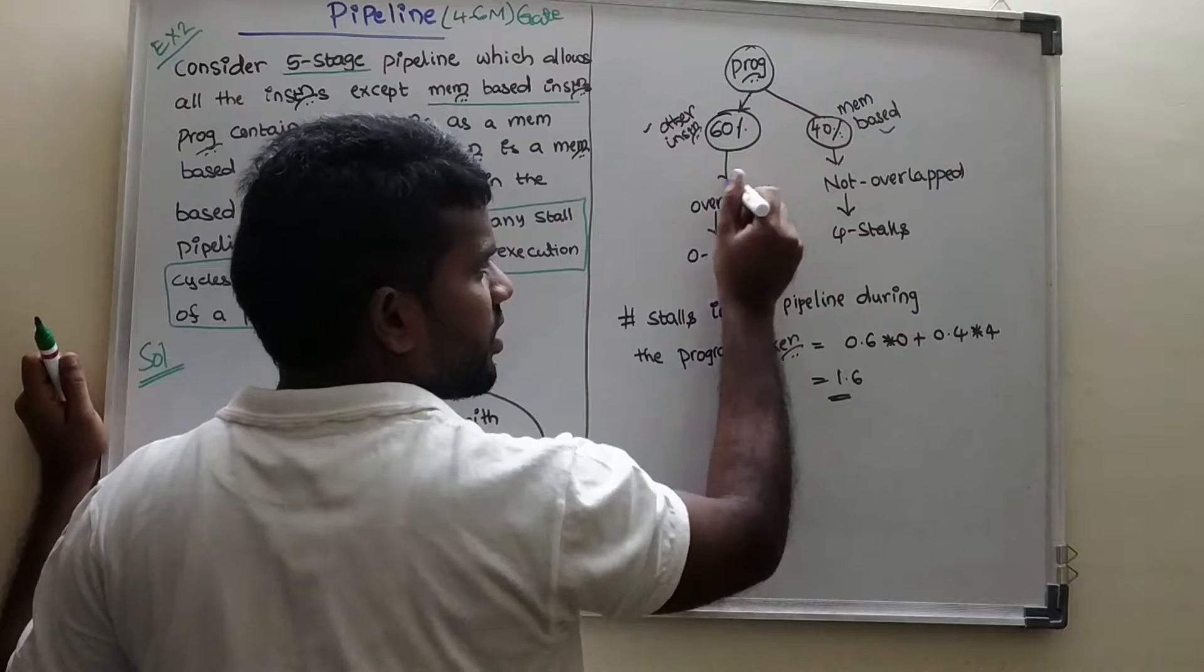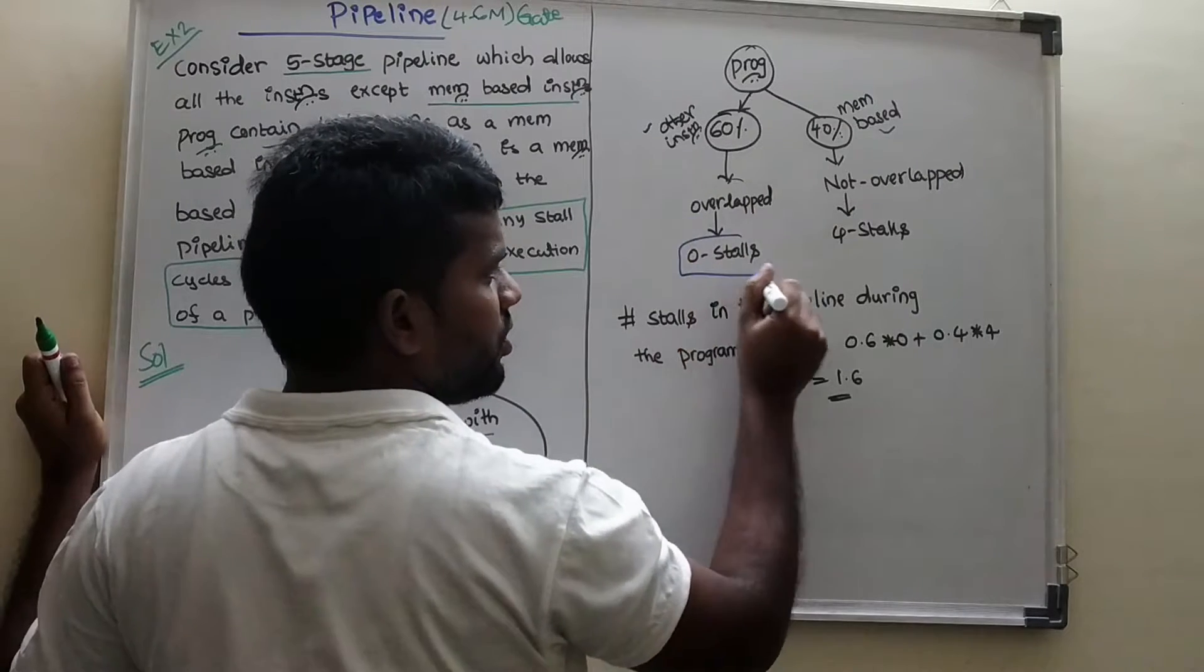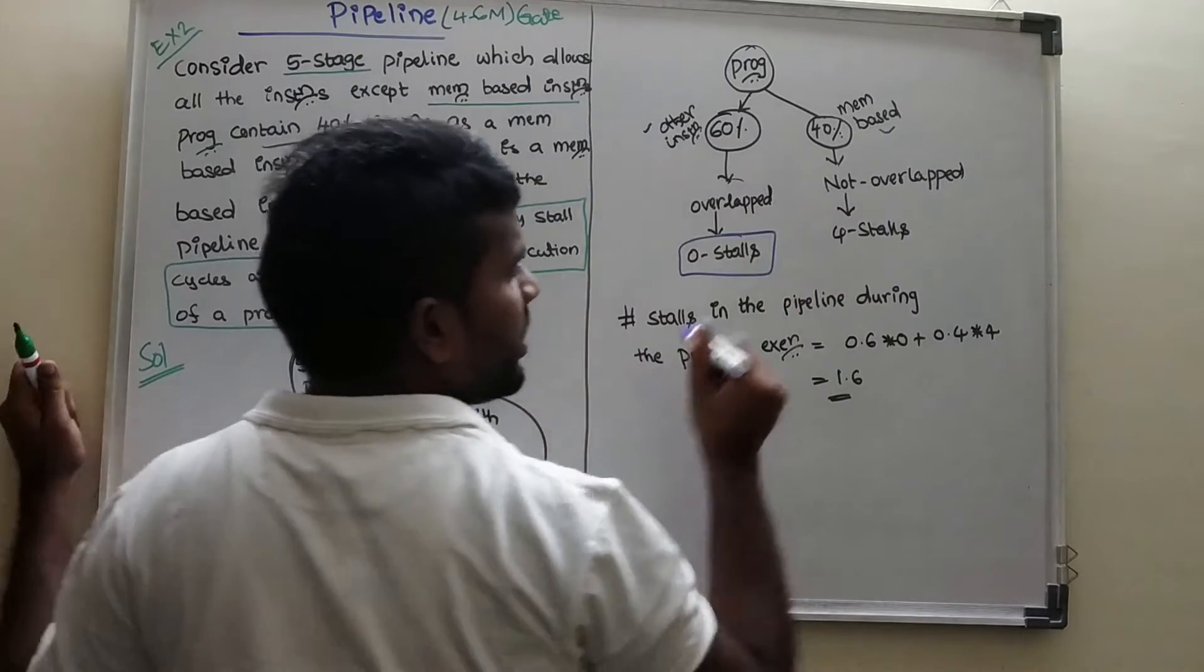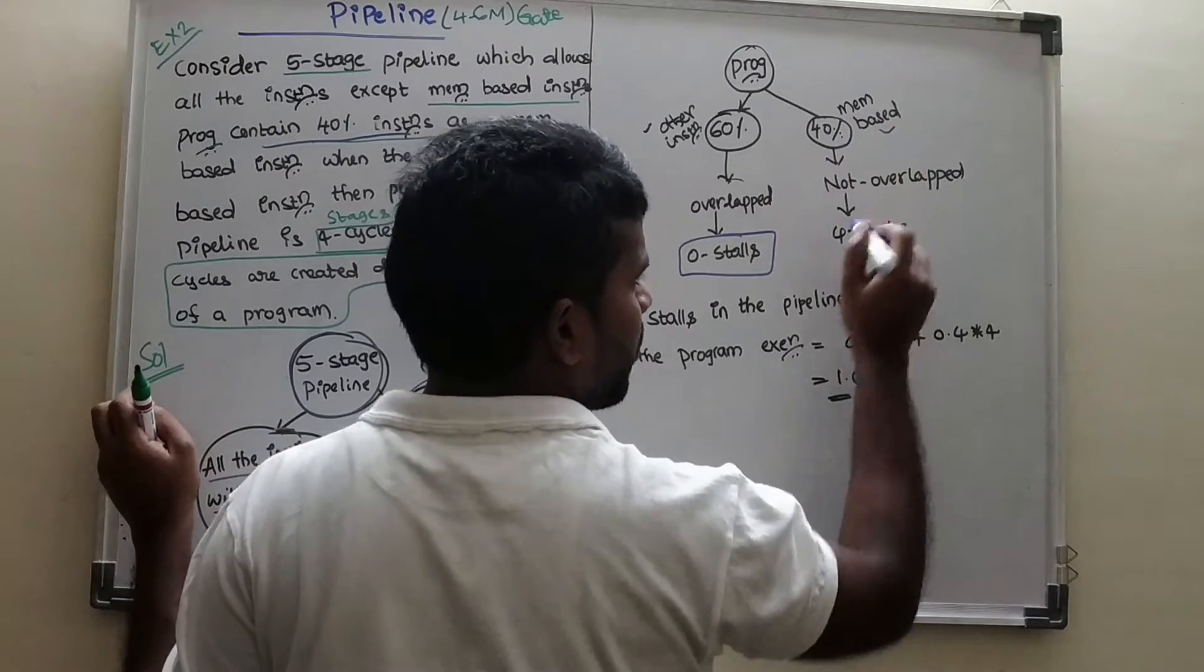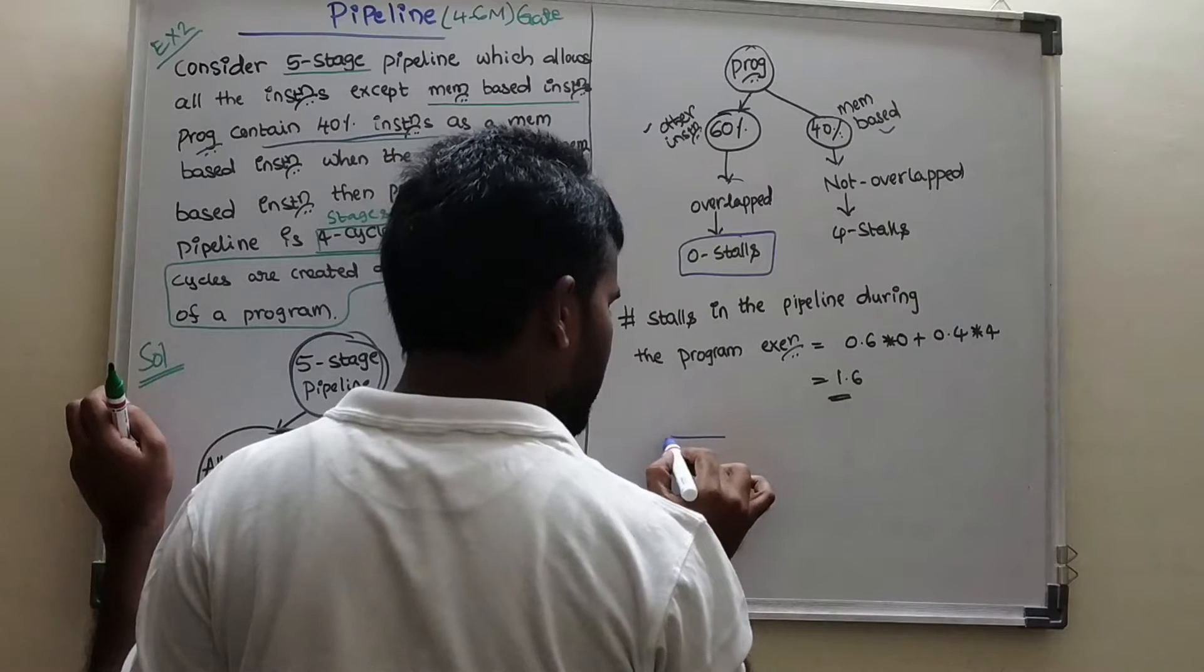In 60%, these are overlapped, so we will get 0 stalls. Here, not overlapped. Are you getting my point? In 40%, not overlapped. Here there is a cycle.